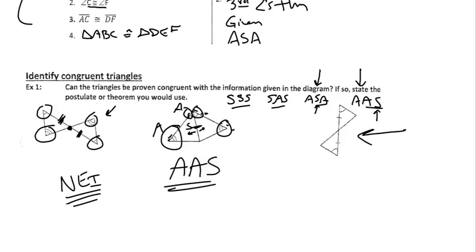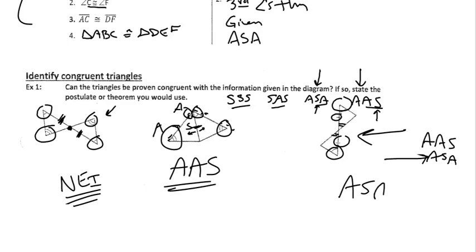I want you to try this one. Try to use the given information and anything from your geometry toolbox to figure out how you'd show that these are congruent — it can be done. We have the two givens, and I see the vertical angles theorem. So I have two angles and a side — it's either AAS or ASA. Is the side between the angles or not? It is between the angles. So it is ASA.